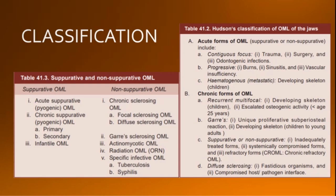Due to the long-standing existence of osteomyelitis as a clinical entity, a variety of classifications have been given. Based upon the presence or absence of suppuration or pus, osteomyelitis may be classified as suppurative or non-suppurative osteomyelitis. The historically accepted classification is based on its clinical course: acute, sub-acute, or chronic form.